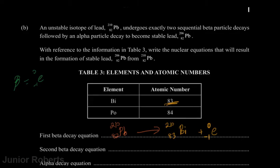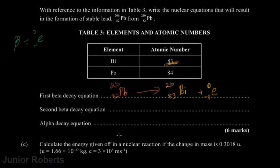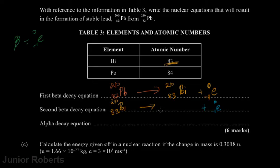For the second beta decay, our reactant is bismuth-83, mass number 210. It undergoes beta decay, again emitting an electron with atomic number −1 and mass number 0. So the new atomic number is 83 − (−1) = 84, and the mass number remains 210. Looking at the table, the element with atomic number 84 is polonium, giving us polonium-210.